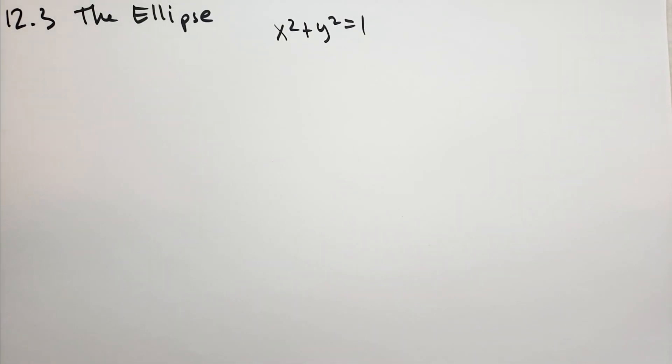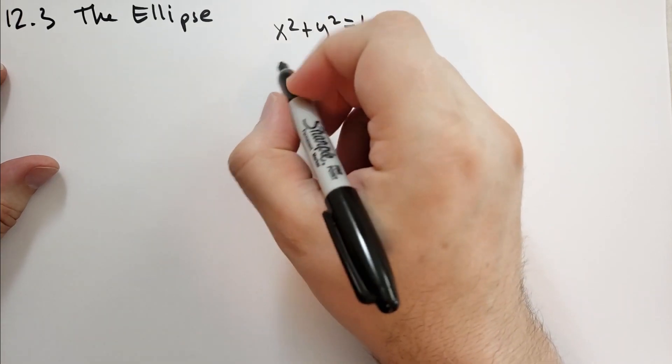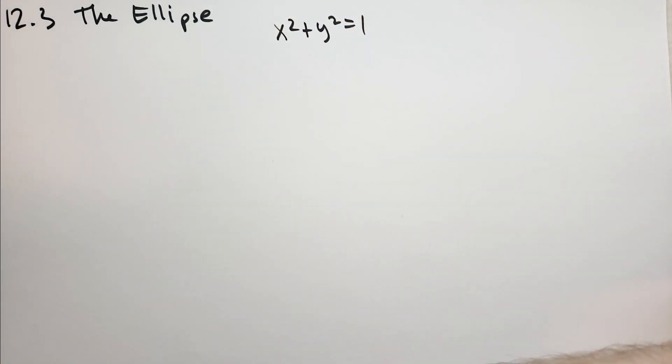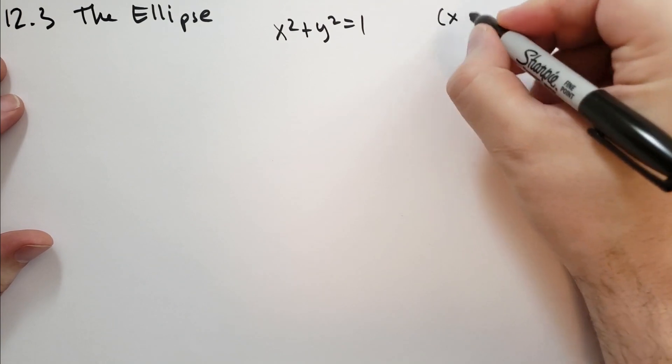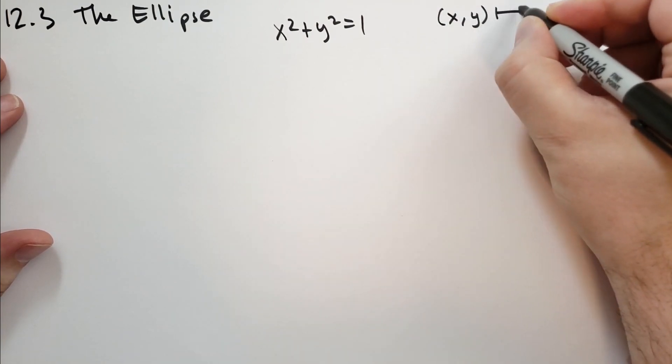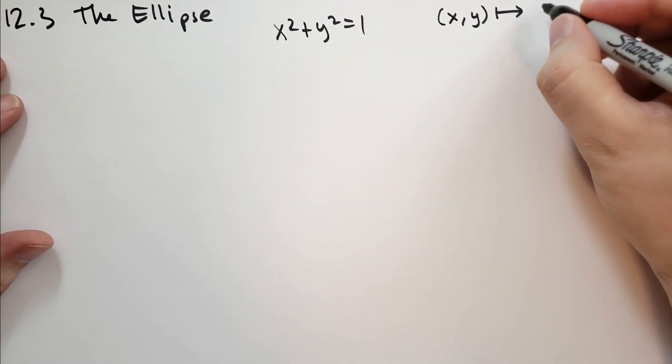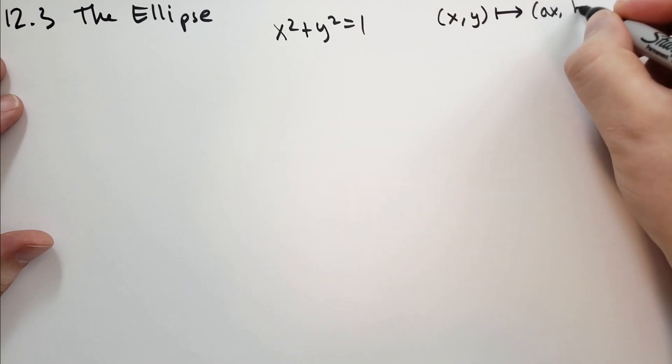He says suppose that we stretch these guys out. So let a and b be positive numbers. To each point x, y we associate the point ax, by. So we are basically going to take x, y and we are going to map that through some transformation that takes us to ax, by.